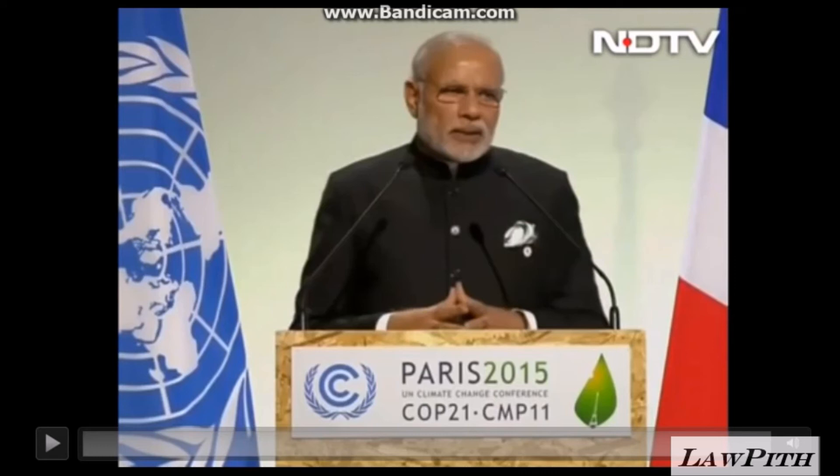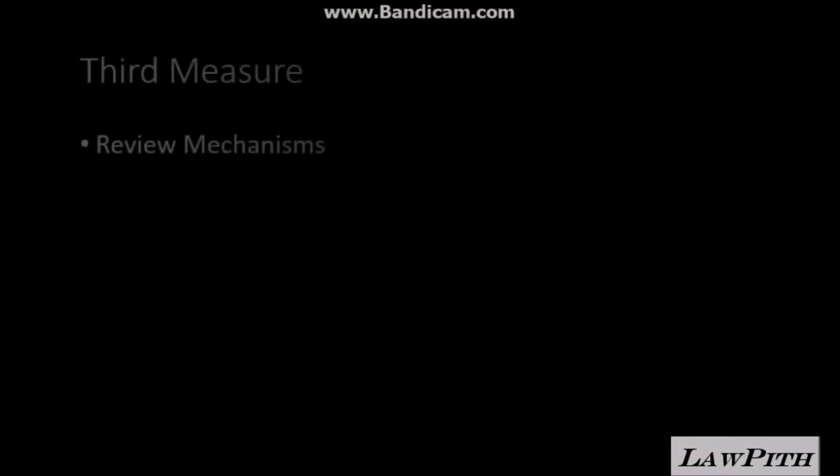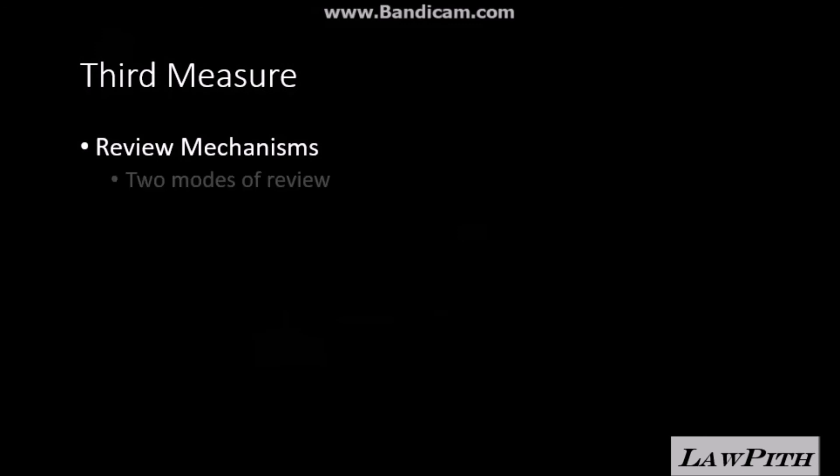Now let's move to the third measure which the Paris Agreement has put in place to achieve its objective — the review mechanism. Under the review mechanism, the Paris Agreement has created two modes. The first one is the transparency agreements, under which every country has to submit data with respect to their emissions and targets, and how they are developing policies to achieve those targets. Every country should be completely transparent with respect to its emissions so that every other party knows what they're emitting, what they want to achieve, and how they're going to achieve it.